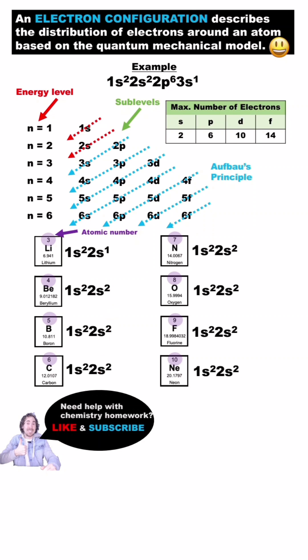Alright, 2S2 for everything else, it fills that sublevel, and time to move to the next one, the 2P. The P sublevel can hold a maximum of 6 electrons. So for each element, we'll put the rest of the electrons into the 2P.